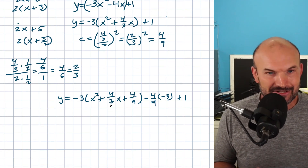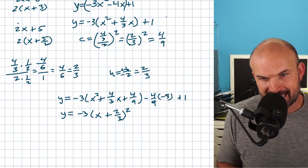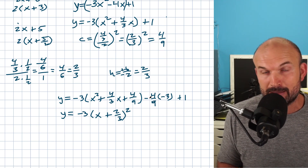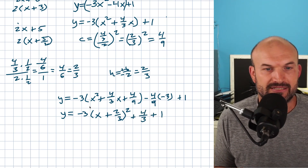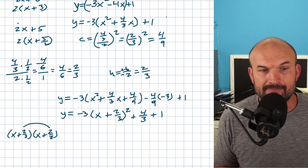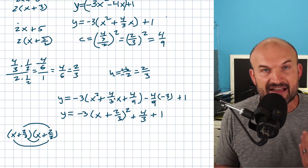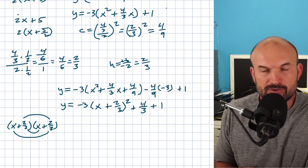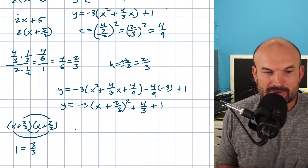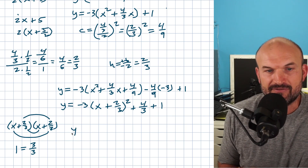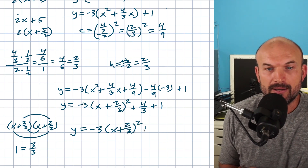Now let's write this as a binomial squared. H is two thirds, and the middle term is positive, so this is x plus two thirds, quantity squared. Checking: two thirds times two thirds gives four over nine ✓, and the inner and outer middle terms give two thirds x plus two thirds x, which is four thirds x ✓. For the constants: rewrite one as three over three so the denominators match — three over three plus four thirds equals seven thirds. Final answer: y equals negative three times x plus two thirds, quantity squared, plus seven thirds.